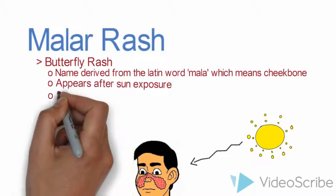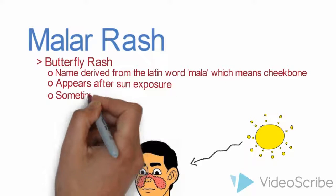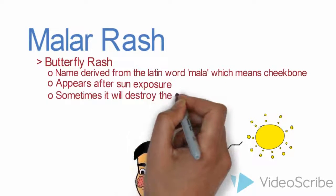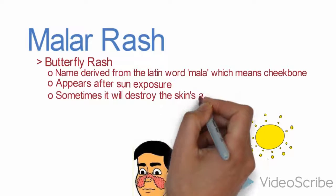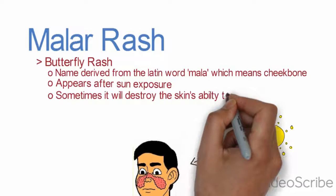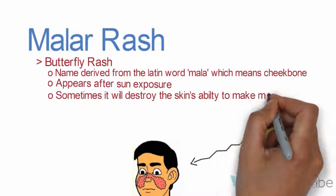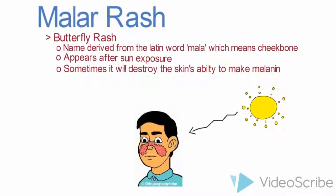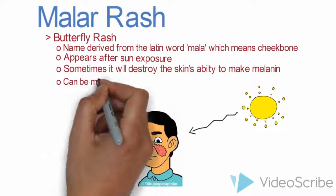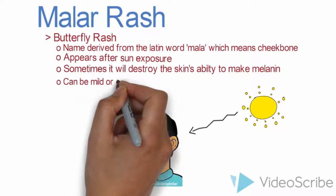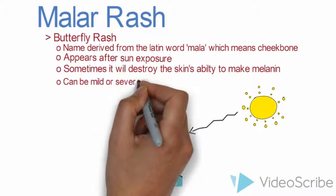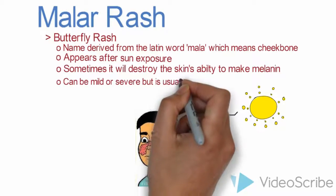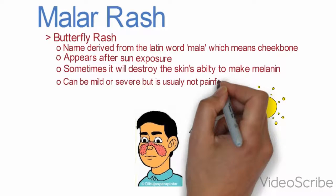The malar rash will sometimes destroy the skin's ability to make melanin. That's why most people who have the rash have a different skin color at the bridge of their nose. It can be mild or severe, but it's usually not painful.